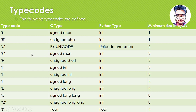For unsigned short we will be using capital H. For signed int, small i. Unsigned int, capital I. Signed long, we would be using small l. Unsigned long, we would be using capital L. For signed long long, we would be using small q. Unsigned long long, we would be using capital Q.